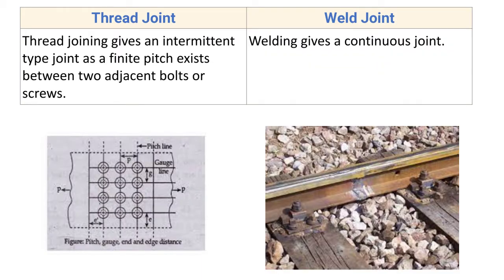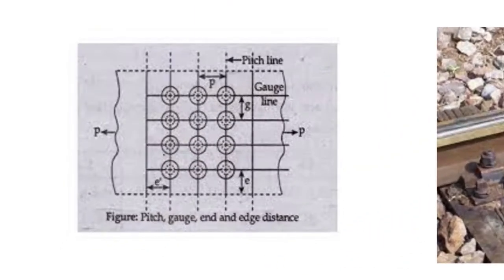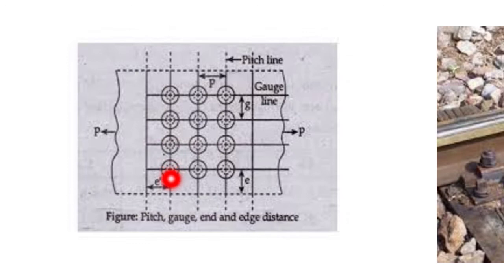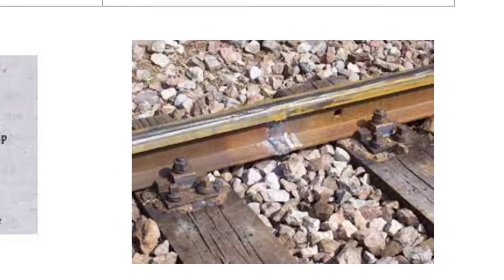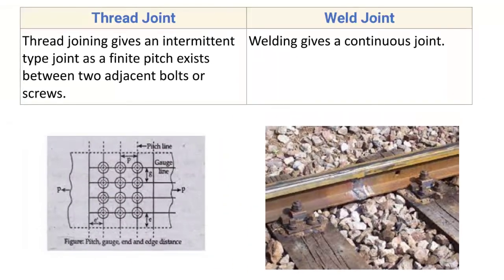Threaded joint gives an intermittent type of joint, as a finite pitch exists between two adjacent bolts or screws. Here you can see two plates joined together with a nut and bolt arrangement — these bolts create an intermittent joint with a pitch between them, so the plates are joined only at discrete points. Weld joint, on the other hand, gives a continuous joint, as seen in two rails joined by welding.